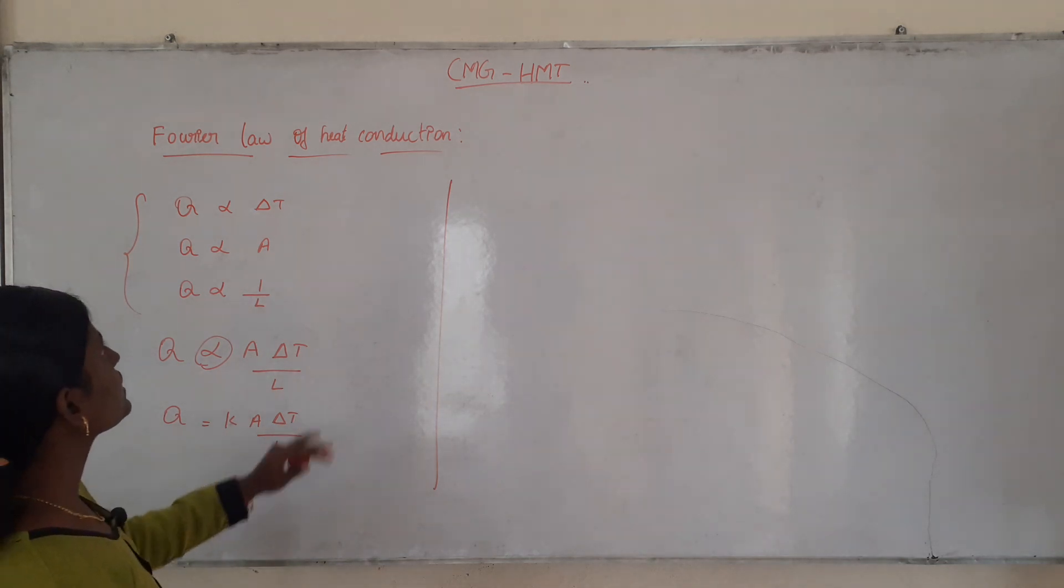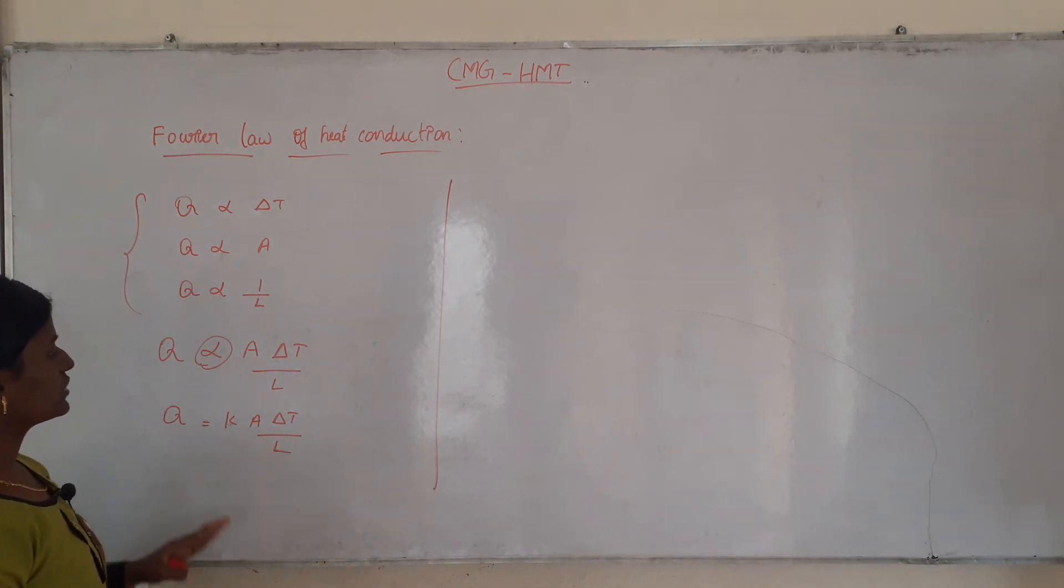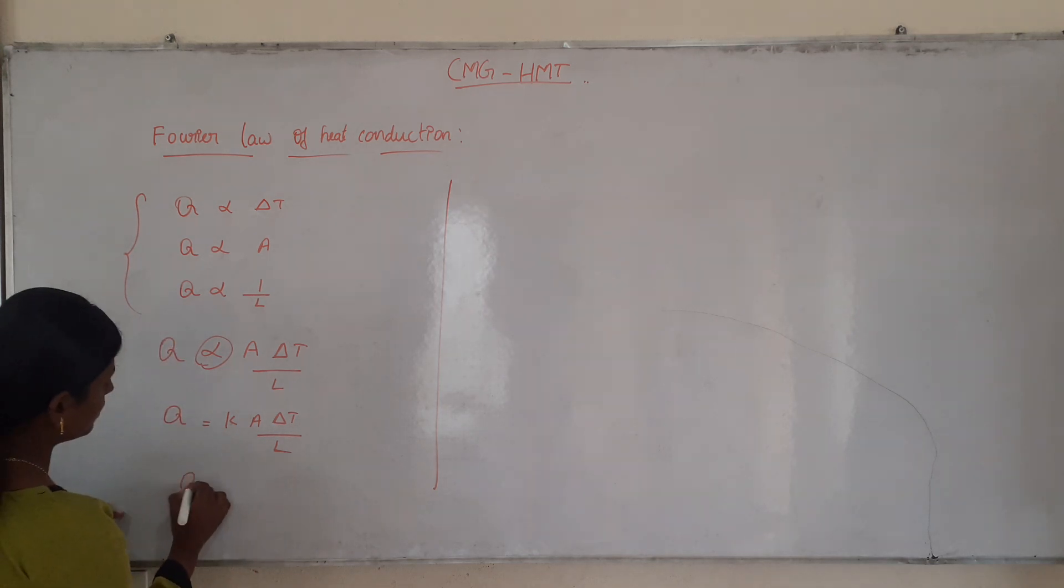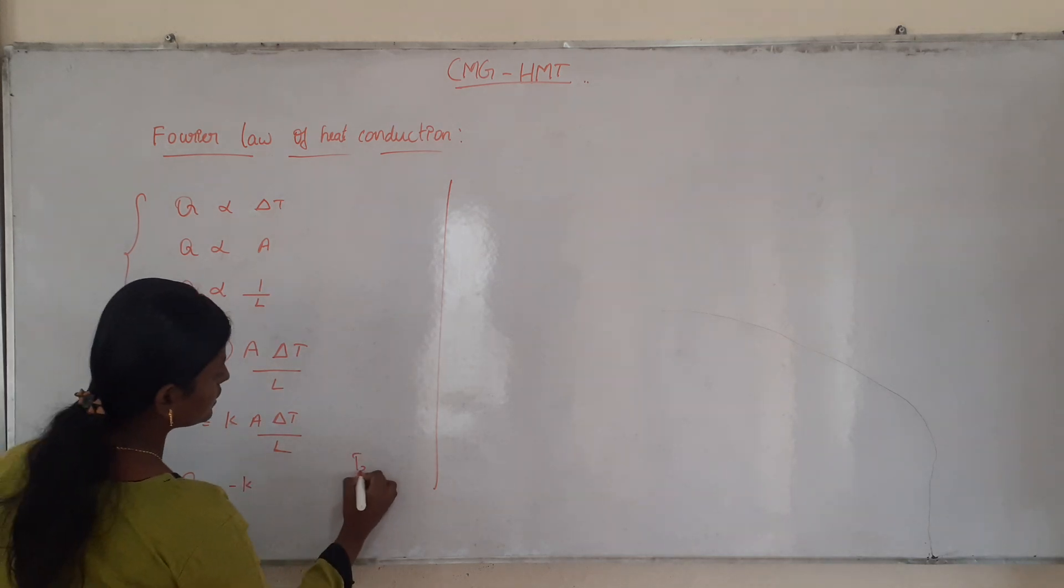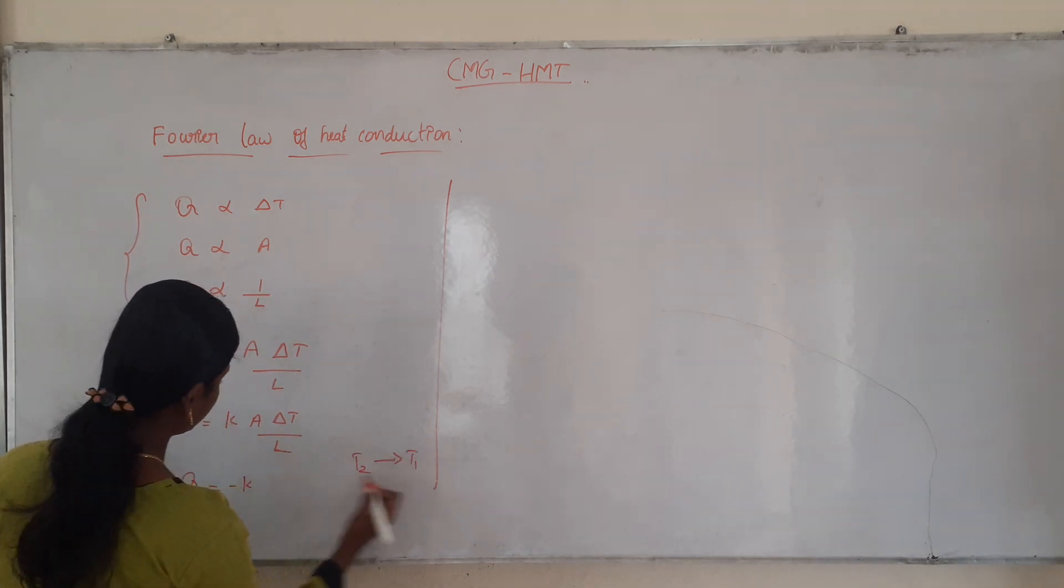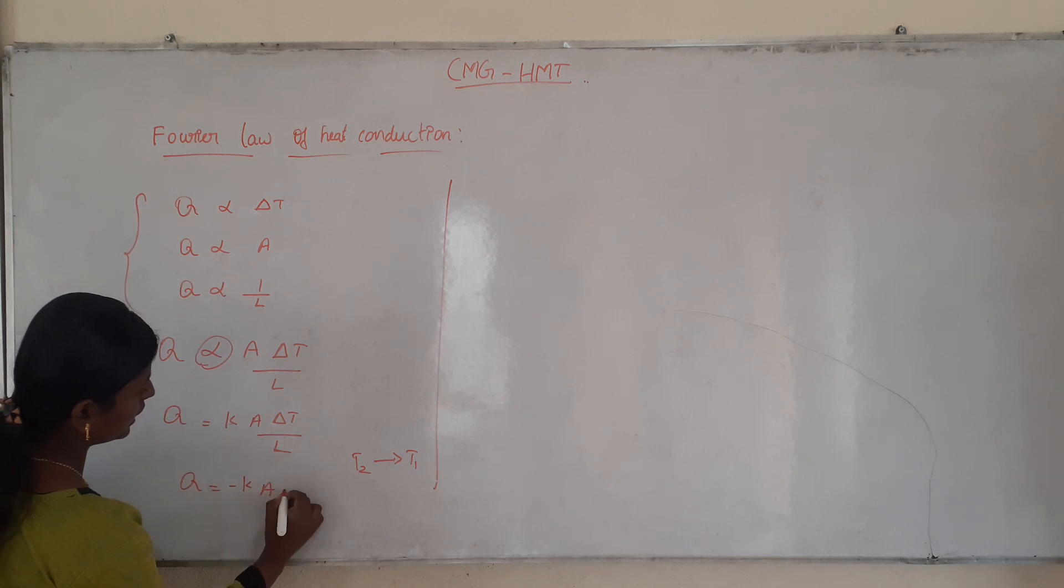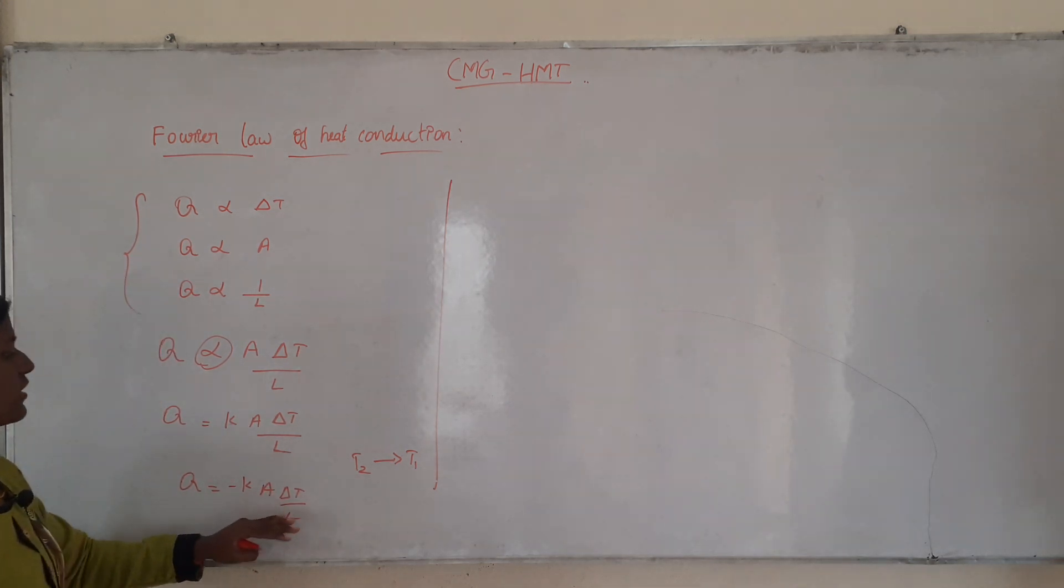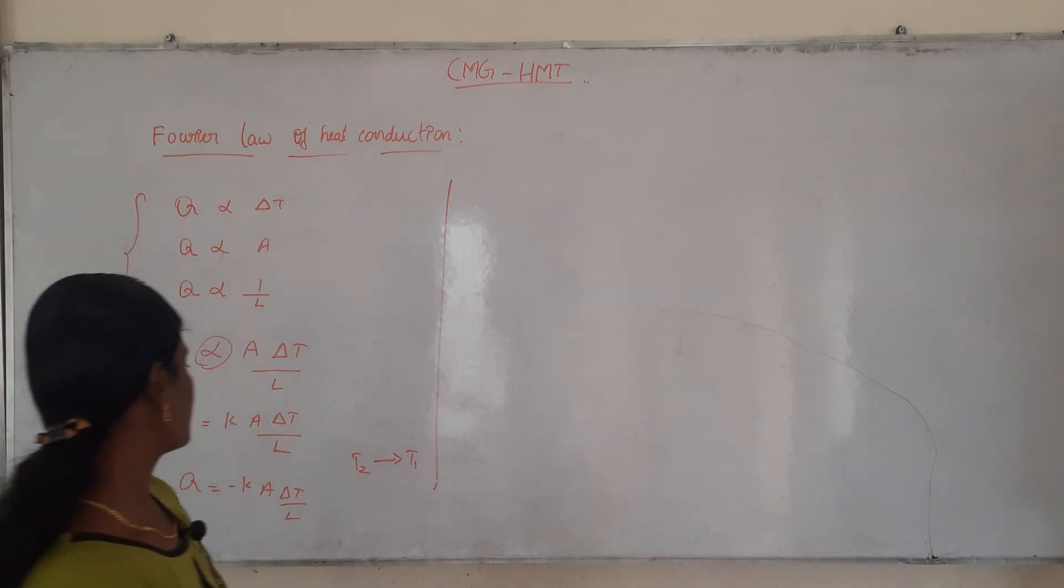Now, if we look at temperature difference, heat transfer is from higher body to lower body. So, Q is equal to minus that point. Higher body to lower body heat transfer, K A minus K A into del T divided by L.